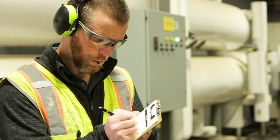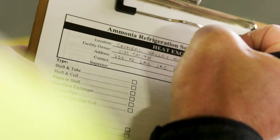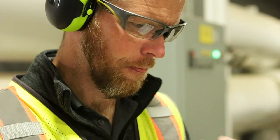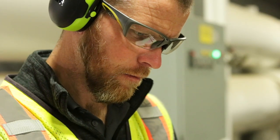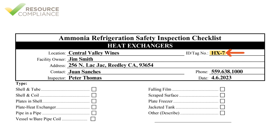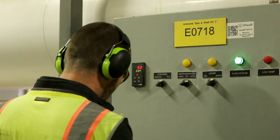The simplest part of completing a heat exchanger checklist is filling out the contact information. Each IIAR 6 checklist requires the inspector to indicate the location, owner, and physical address of the system. The contact's name and phone number should be the facility representative responsible for ensuring the inspection is completed. Additionally, the inspector must write his or her own name and the date of the inspection. The ID, or tag number, belongs in the upper right corner and can typically be found on the equipment label or P&ID.